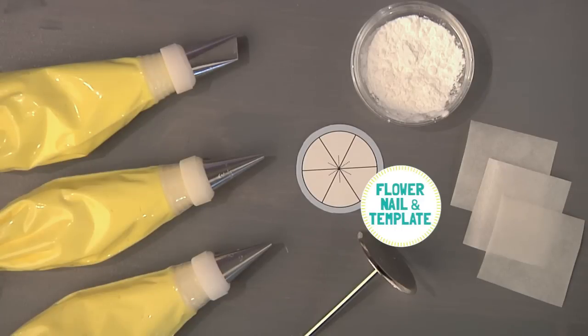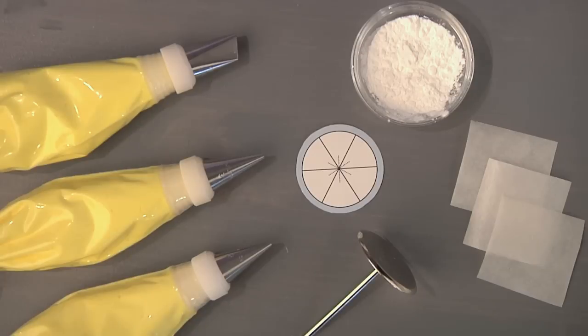and a tip 2, a flower nail and template, and finally a flower square or small square of parchment.